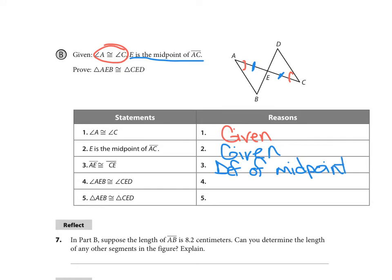And when it tells us that, we know that AE is congruent to EC because of the definition of midpoint. All right, so now next it says angle AEB, that was this angle right here, is congruent to CED, that angle. And those two angles are congruent because they're vertical angles.